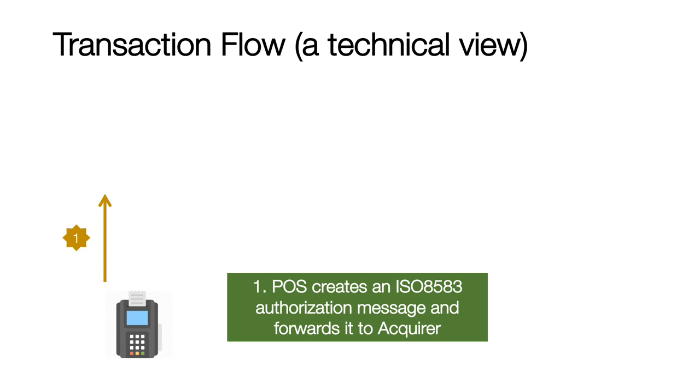In the previous slide we looked at a business view of a transaction flow. Through this slide, let's look at the transaction from a technical perspective. When the transaction is performed at the POS terminal, the POS creates an ISO 8583 message and sends it to an acquiring switch.